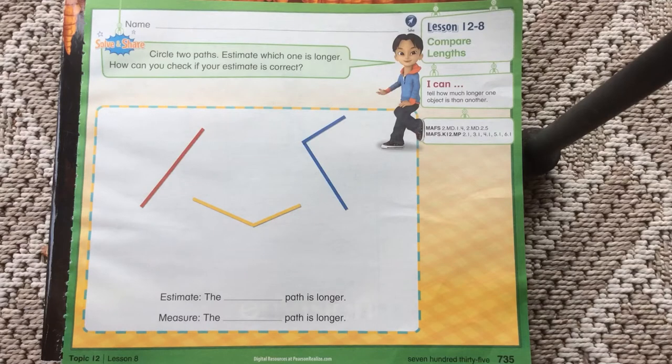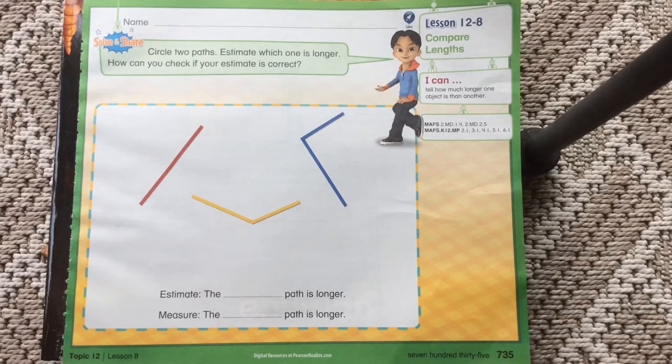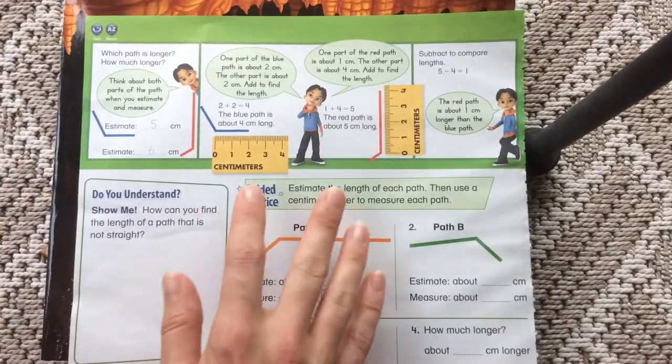Good morning. Today we're doing lesson 12-8 in our math book. You can see it starts at page 735. I'm going to let you do this page on your own, and if you have any questions, just follow along and maybe start on the back with me.